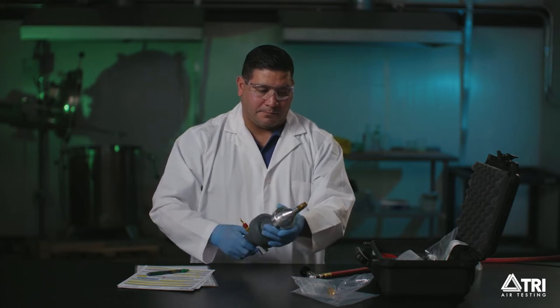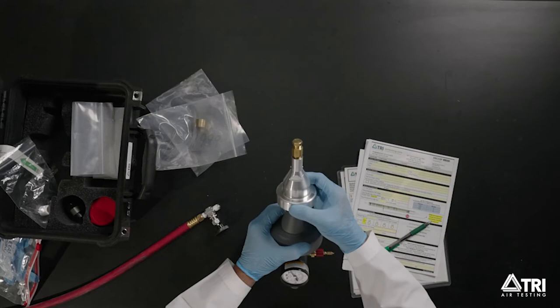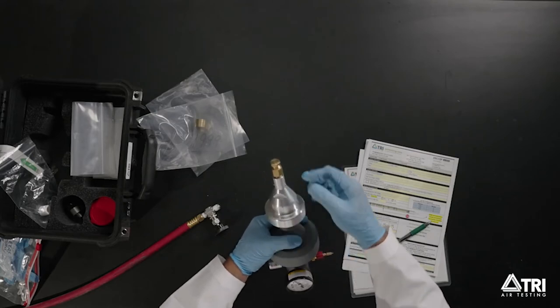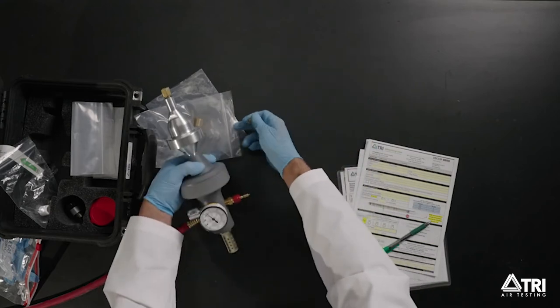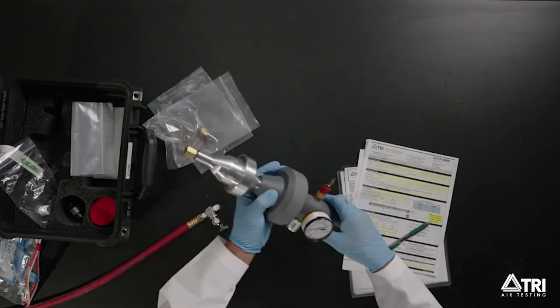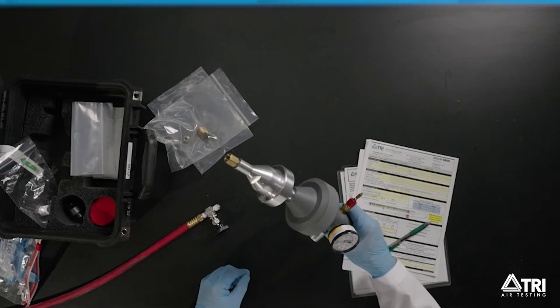It's important to make sure the filter union and the Champion 35 are screwed in together properly. Double check this before attaching the completed assembly to your air source. Remove the plug from the other end of the union and place in the plastic bag.